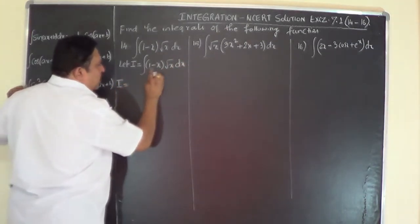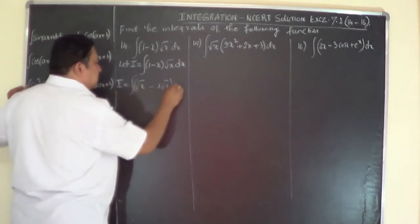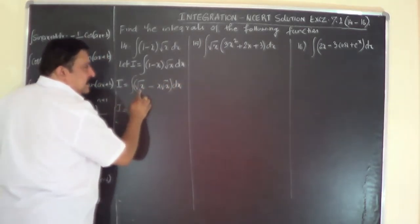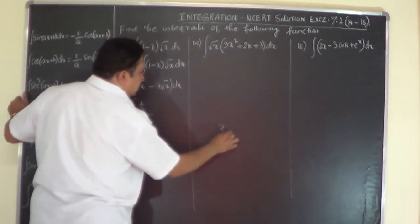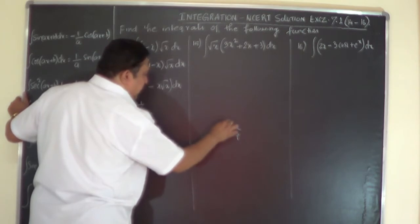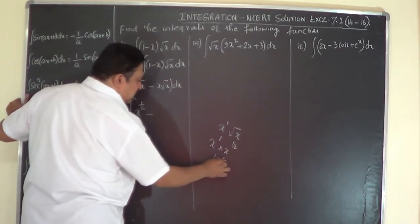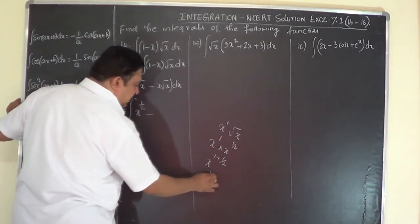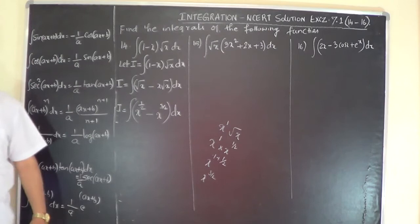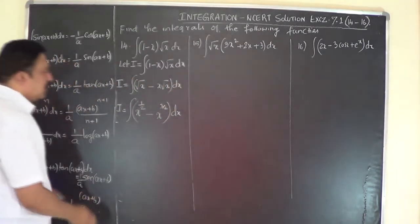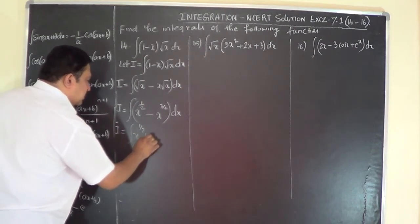I equals: 1 into √x is √x, minus x into √x is x√x dx. Now √x means x has got power half, so this is x to the power of half, minus x√x. Here x has got power 1 and √x has got power half, so it is a^m · a^n = a^(m+n): 1 plus half is 3/2, so this becomes x to the power of 3/2 dx. Now this is ready — separate it: ∫x^(1/2) dx minus ∫x^(3/2) dx.